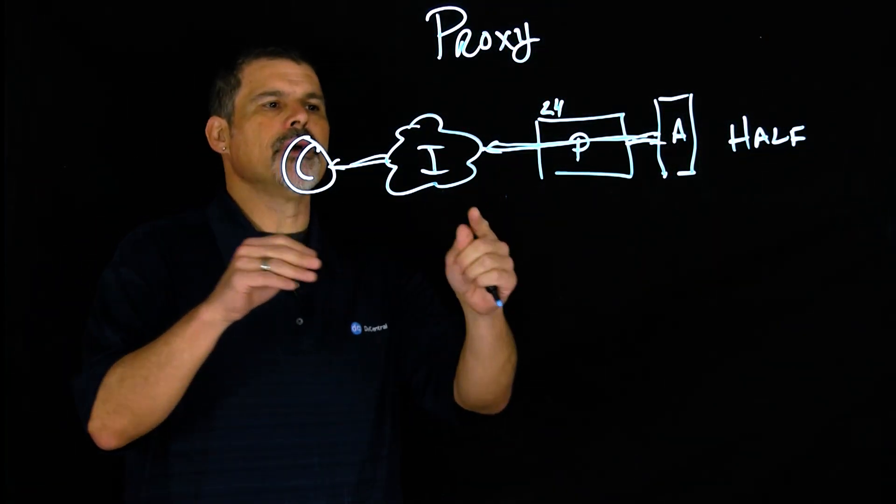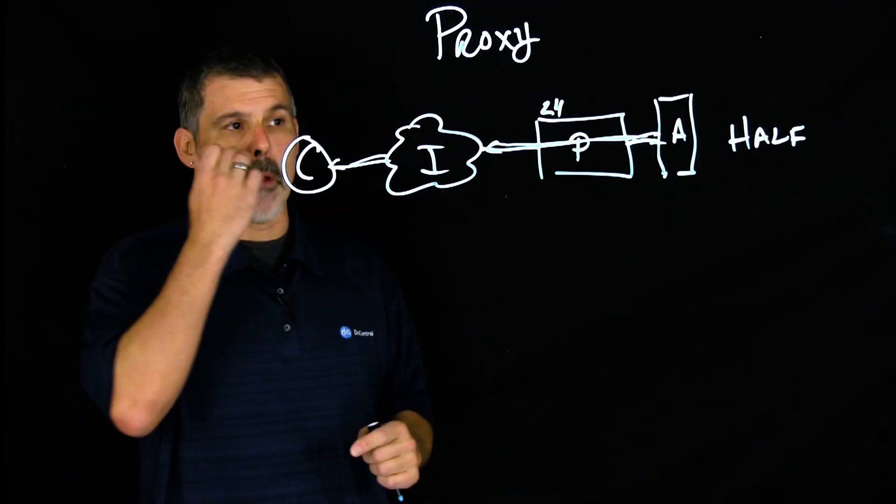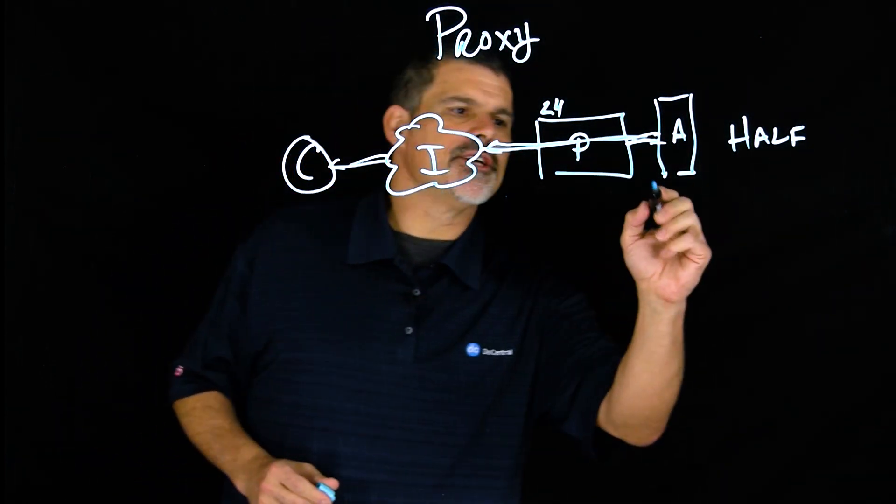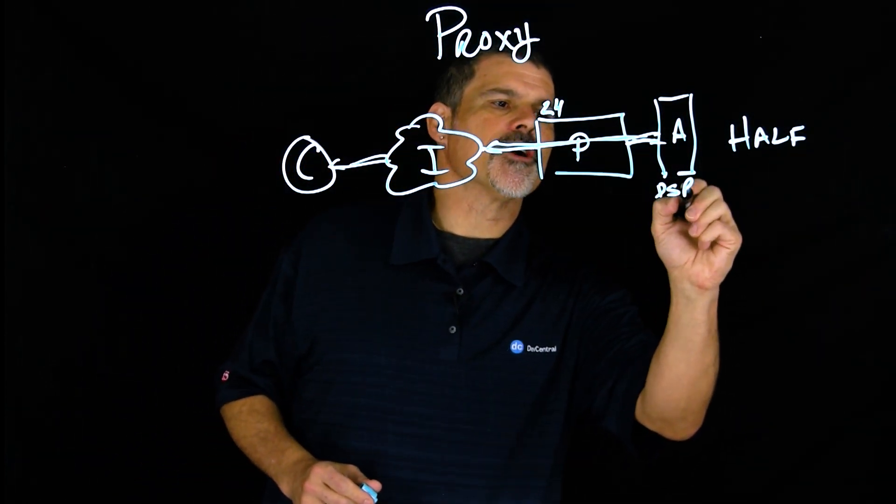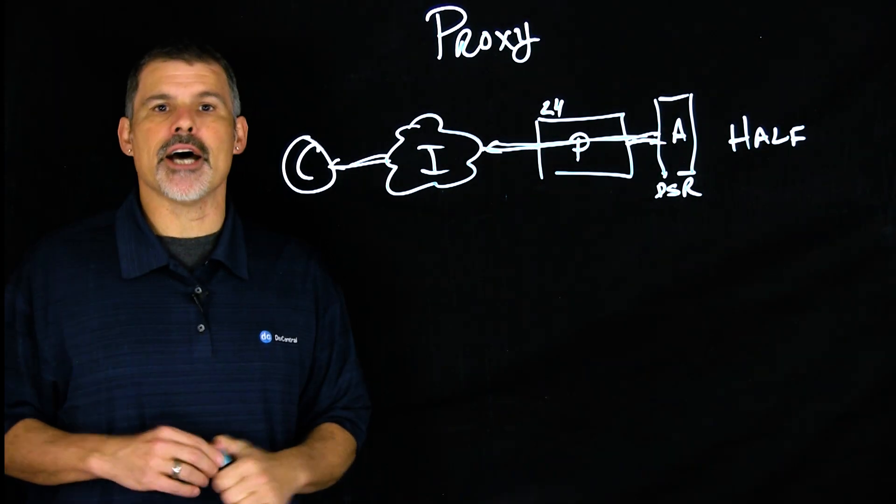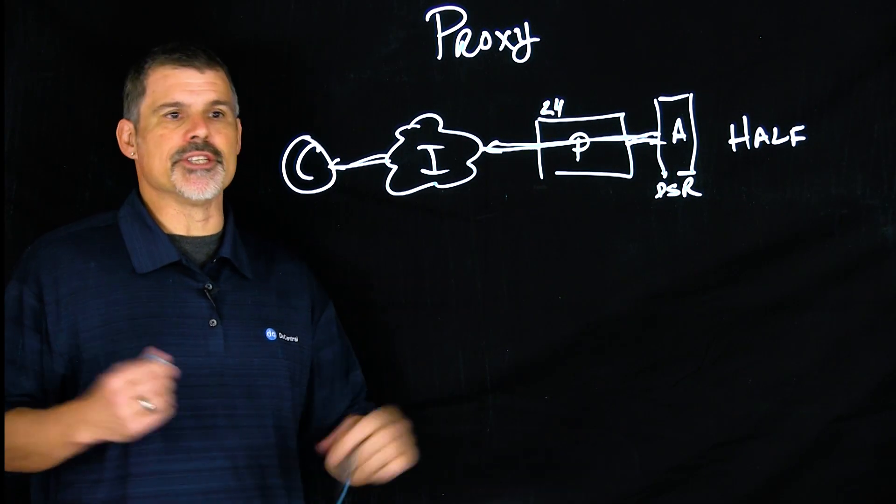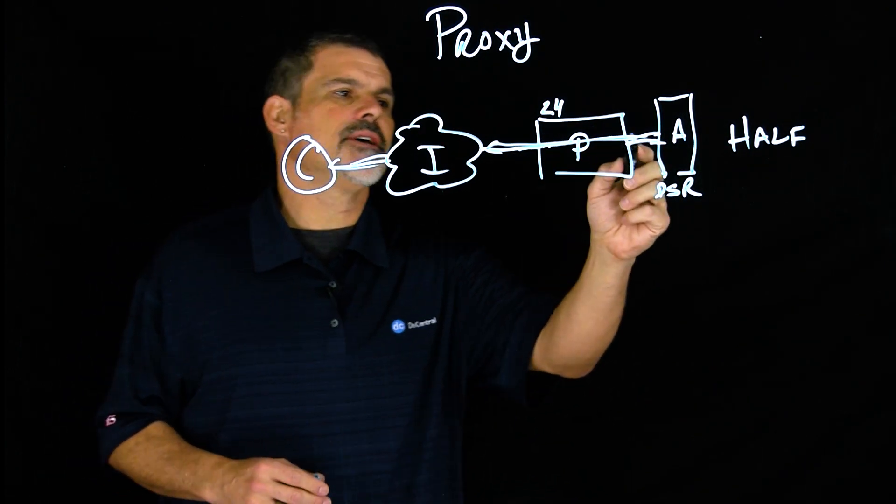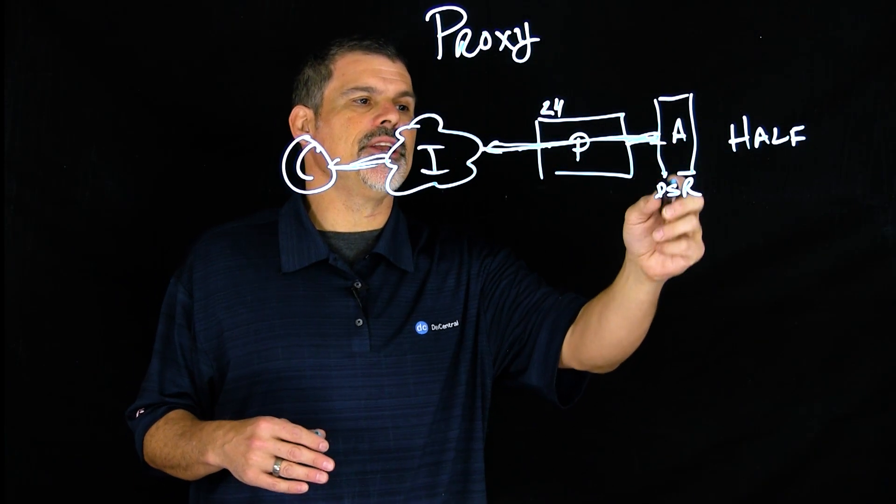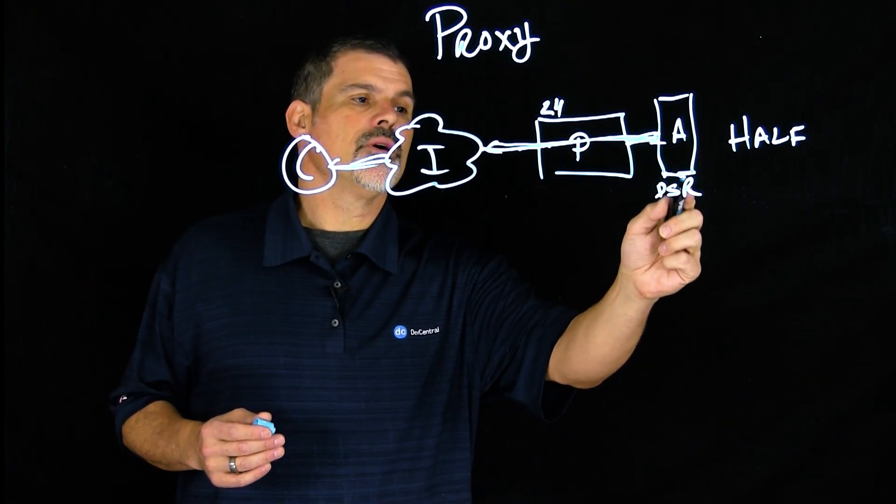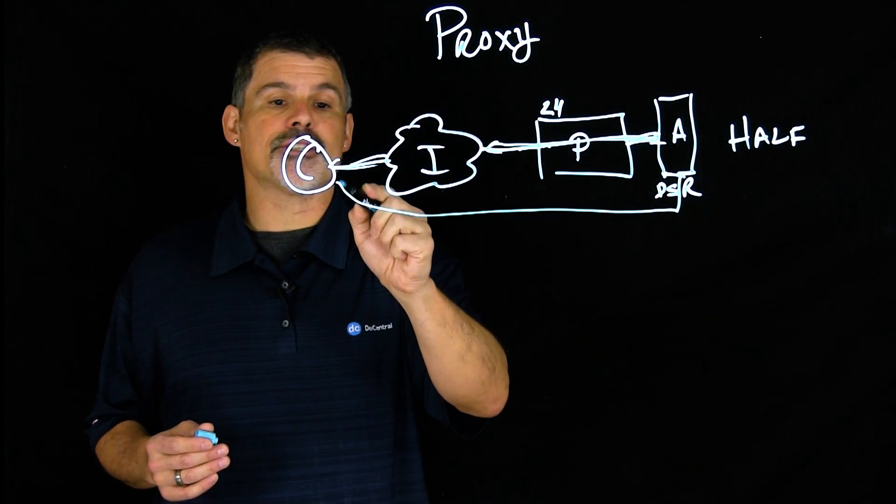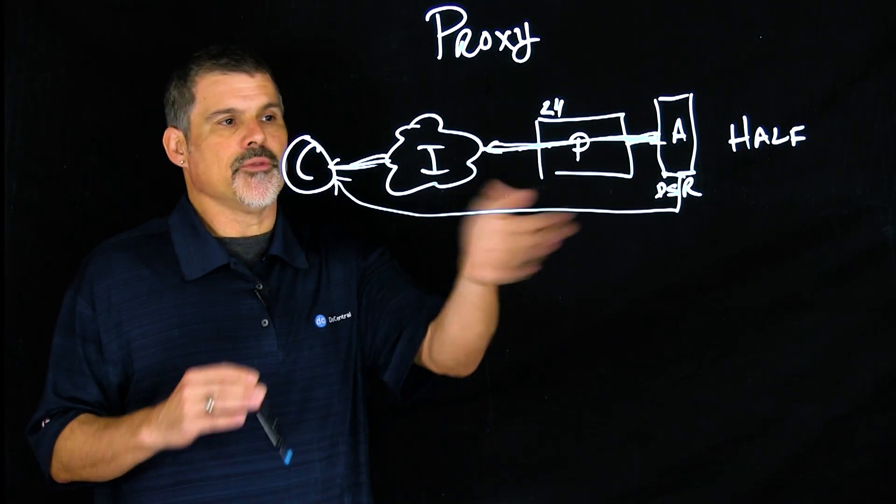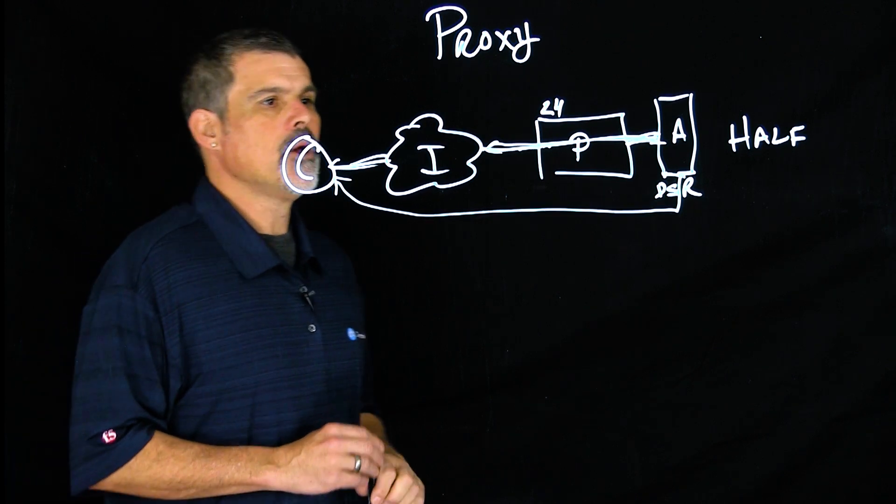Another good use case for the half proxy is direct server return. So things like streaming protocols, for instance. In that situation, the client will again connect to the proxy. Proxy connects to the application. And then the streaming protocols will actually simply bypass the proxy and go back directly to the client. That's how a lot of these streaming protocols and direct server return works.